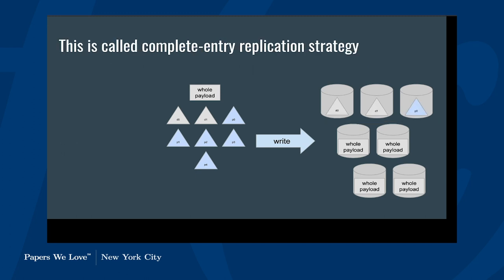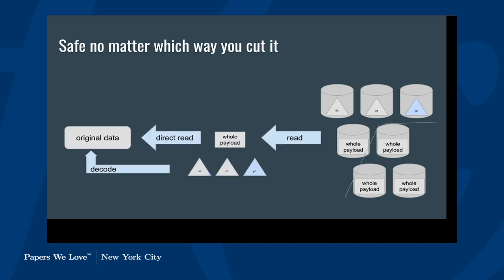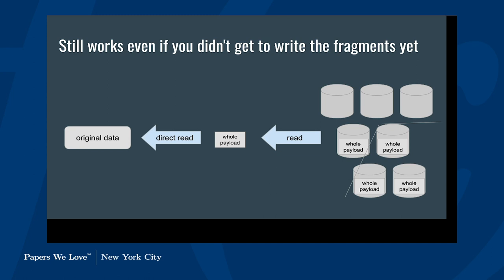Later, if the other servers come up during normal operation, they get filled in with fragments instead of complete copies. No matter how you partition the cluster after the write, there will always be at least one whole copy of the data available, along with some number of fragments. Even if the partition happened quickly before all fragments were written, there will be at least one server with the whole original payload — so you can always read back your data. This preserves the safety guarantees that Raft provides.